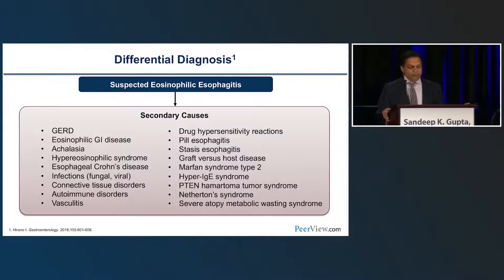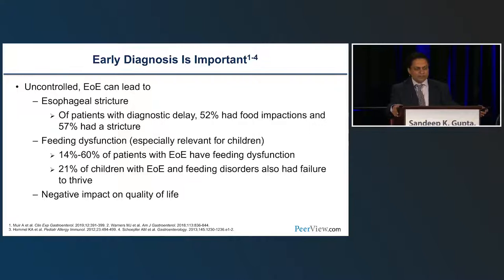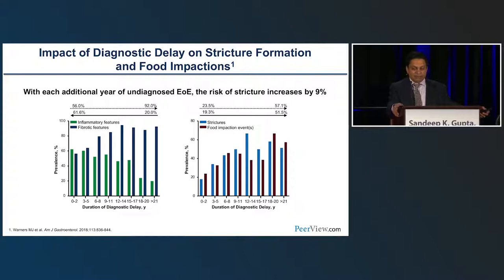You do have to consider the differential diagnosis of esophageal eosinophilia, which includes GERD, achalasia, and Crohn's disease. You don't need to test for everything in every patient, but you should do a mental checklist and appropriate testing as clinically indicated. Early diagnosis is important because longstanding untreated disease can result in quality-of-life complications, feeding dysfunction, and esophageal stricture. With diagnostic delay, over 50% of patients had food impactions and a stricture, and a number of children may present with failure to thrive.